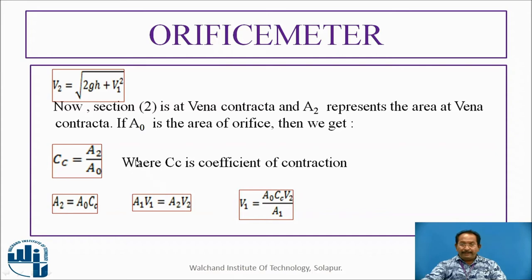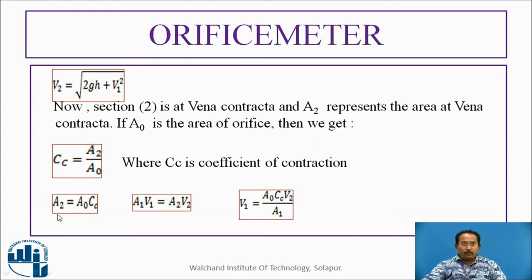Section 2 is at vena contracta, where the area is reduced. A2 represents the area at vena contracta, and A0 is the area of the orifice. The coefficient of contraction CC is the ratio of area of vena contracta to area of the orifice, so A2 = A0 × CC. Using the continuity equation A1·V1 = A2·V2, we get V1 = A0 × CC × V2 / A1. These are the steps to calculate V1 and V2.